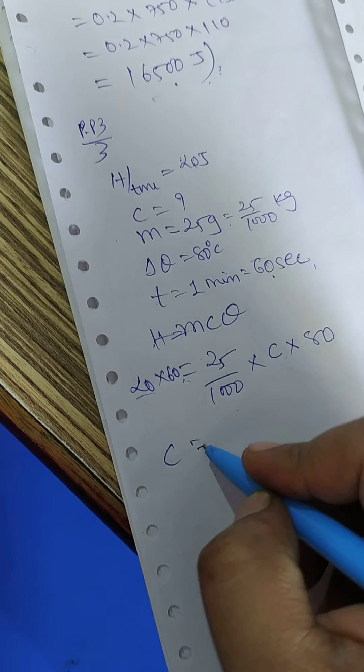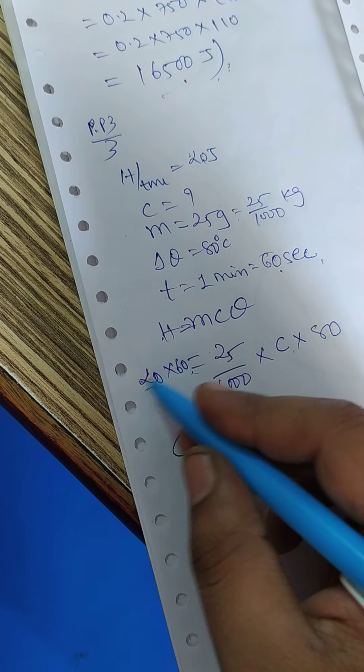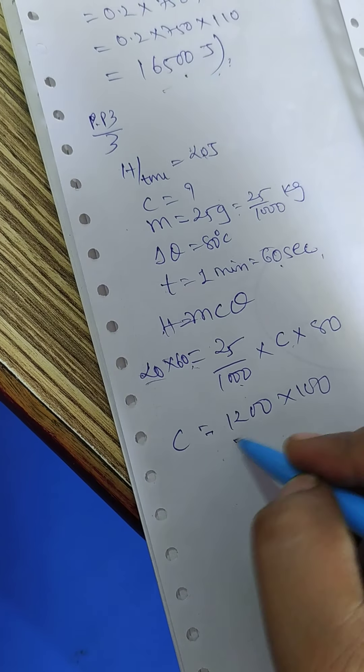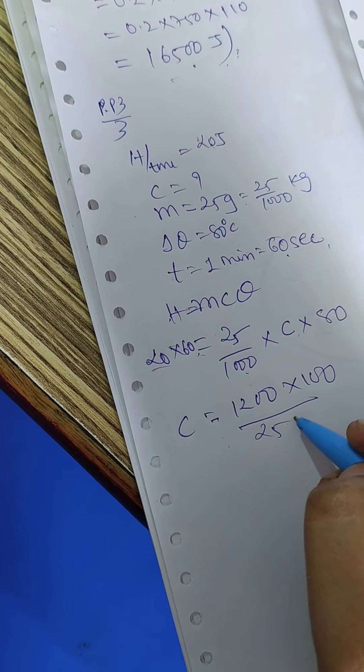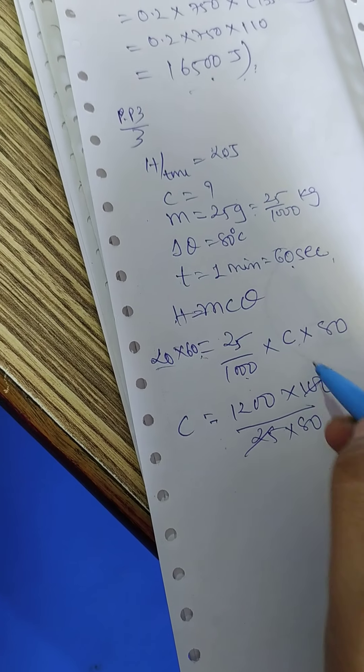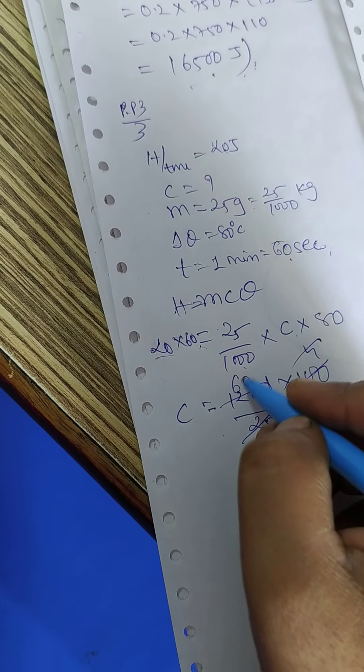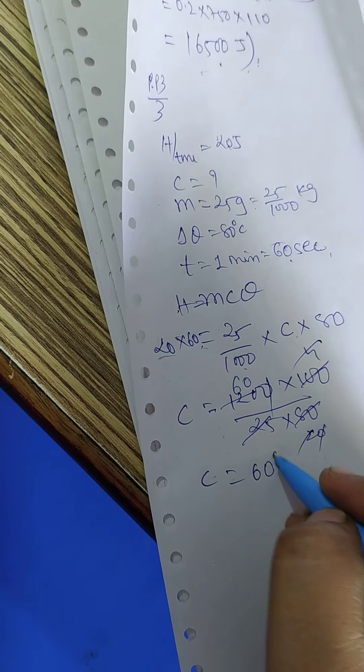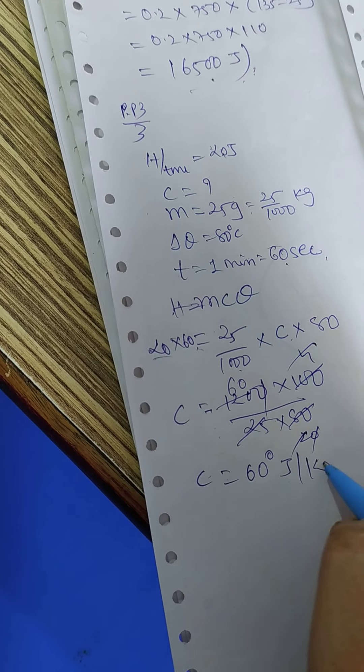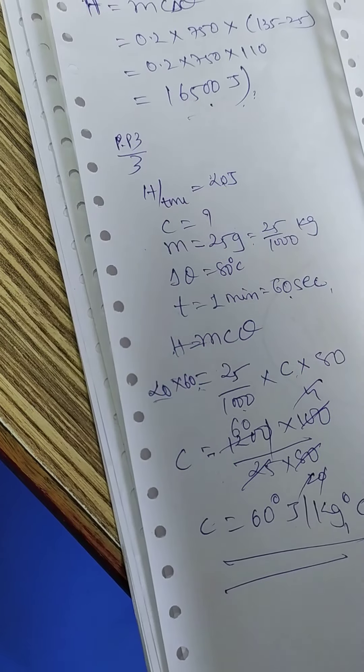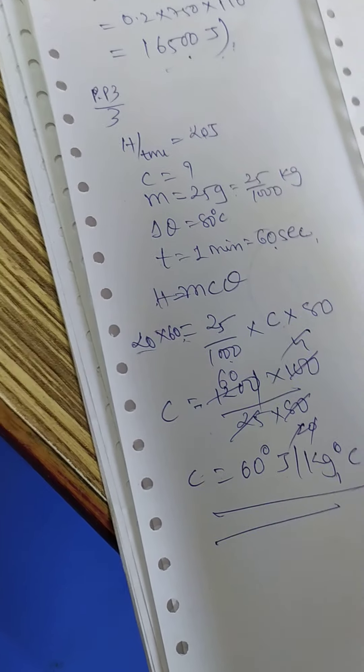Making C as a subject. 1200, 1000 also gets multiplied this side. 25, 80 goes to the denominator. 25 from there, 2 from there. So 60 joules per kg degree centigrade is the specific capacity of the substance.